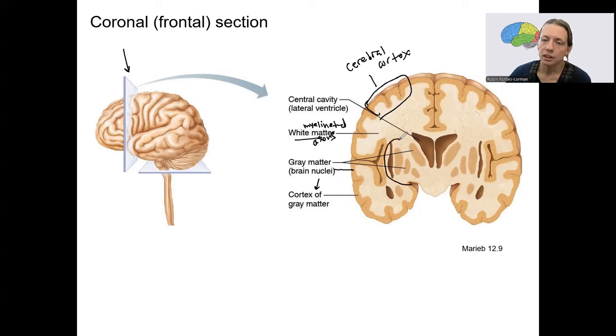This kind of region right here where it says brain nuclei, this is our basal nuclei. Nuclei because there's more than one nucleus there, more than one region. So let's talk about each of these regions. Cerebral cortex and basal nuclei.